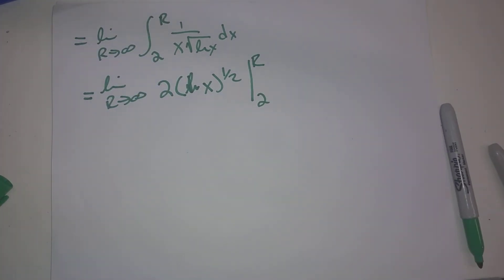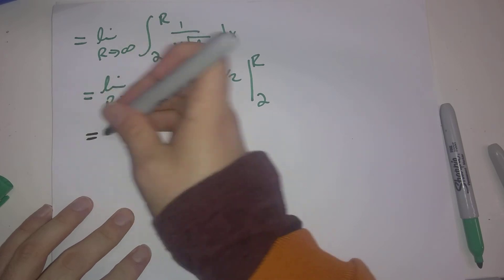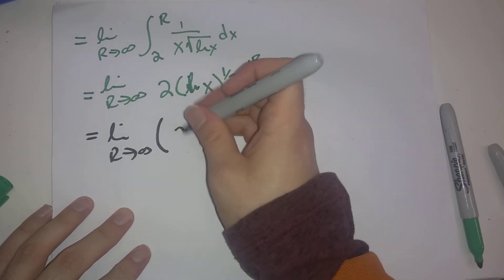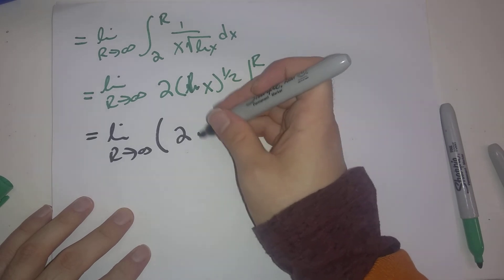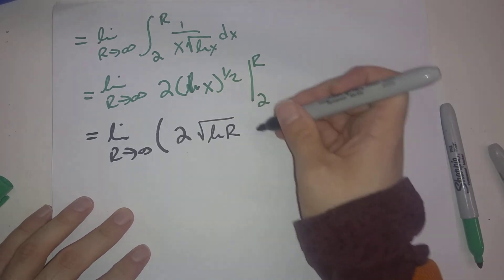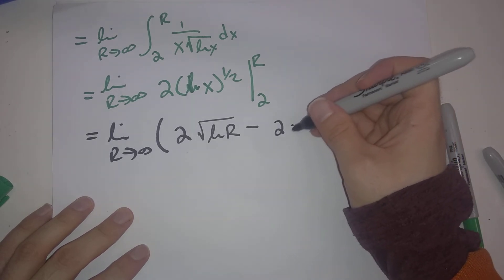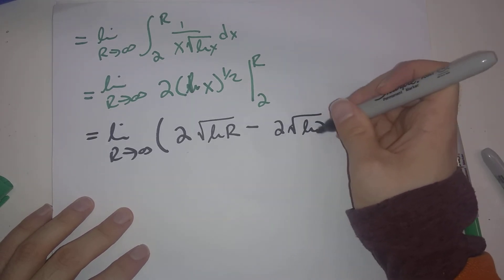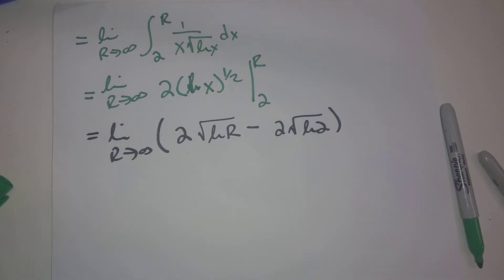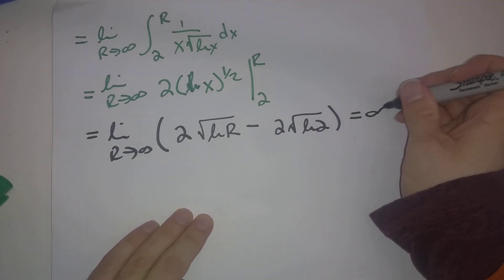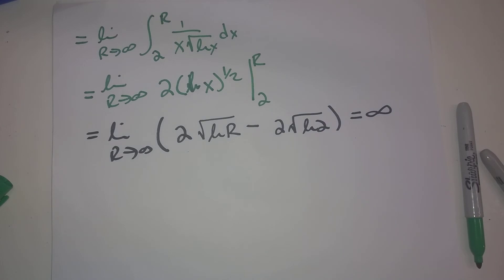What happens now when we plug in 2 and r? Limit as r goes to infinity of 2 times square root of natural log of r minus 2 times the square root of natural log of 2. As r goes off to infinity, natural log of r goes off to infinity. The square root of that is still going off to infinity. This is a constant, and so we end up with infinity here.